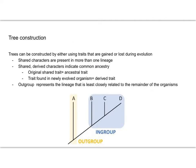When we're building a tree, we're going to be using traits that are gained or lost during evolution. You can build it either way—based off of traits that are gained as the organisms, as the species has changed, or based off of traits that have been lost as the species has changed.